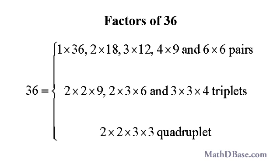Factoring a number is the process of writing a number as a product of its factors. A number may have many sets of factors. For example, 36 could be factored into pairs: 1 times 36, 2 times 18, 3 times 12, 4 times 9, and 6 times 6.